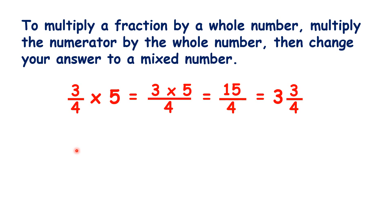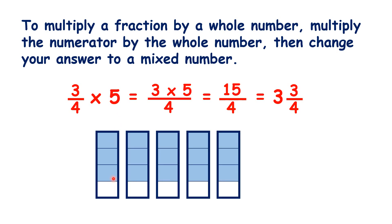We can see how this works because here we have three quarters. Now we're multiplying by five, so we have three quarters five times. And if we regroup to make complete rectangles, you can see that we now have three whole rectangles and three quarters of another rectangle.